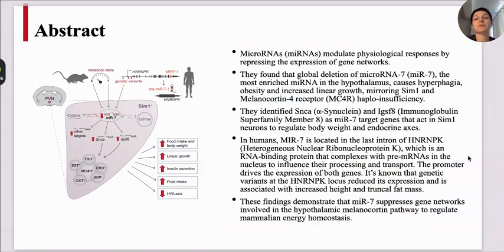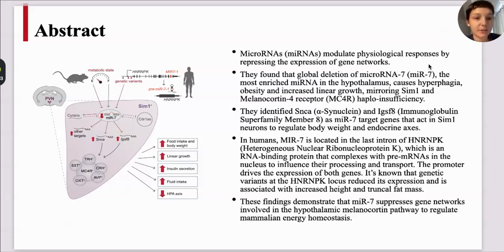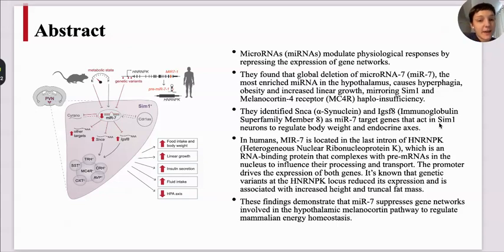The abstract of this paper: first, microRNAs are non-coding RNAs that modulate physiological responses by repressing the expression of gene networks. They found that a global deletion of microRNA-7, which is the most enriched microRNA in the hypothalamus, causes hyperphagia, obesity, and increased linear growth, which mirrors the same SIM-1 and melanocortin-4 receptor haploinsufficiency. They identify that alpha-synuclein and IGSF-8 genes are microRNA-7 target genes that act in SIM-1 neurons to regulate body weight and endocrine axis.